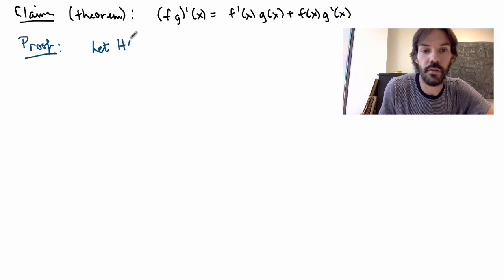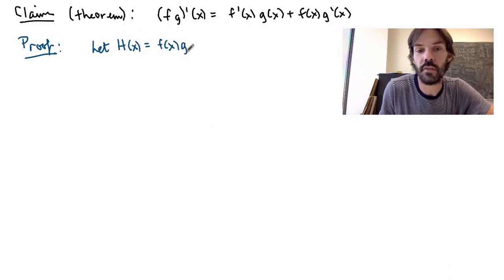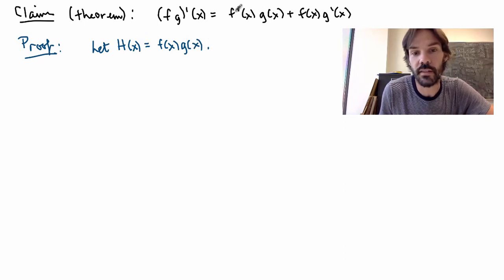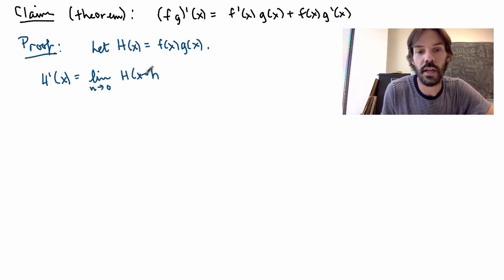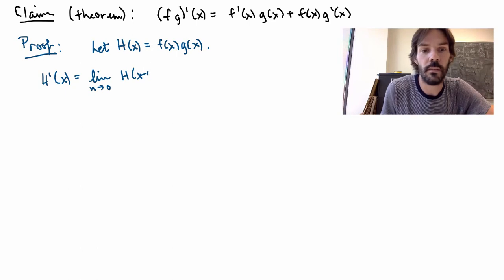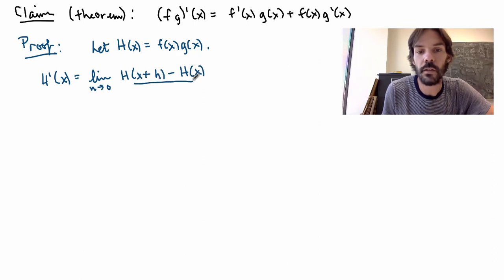So let me first define a new function, capital H of x, as being just the product of my two functions. What I want to prove is that h prime of x is equal to the right-hand side here. So let me start from the definition. So h prime of x is the limit as h goes to zero of h of x plus h minus capital H of x divided by h.